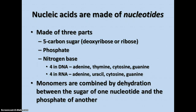Nucleic acids are made of monomers called nucleotides. A nucleotide is made of three parts: a 5-carbon sugar that is either deoxyribose or ribose, depending on whether it's DNA or RNA, a phosphate, and a nitrogen base.